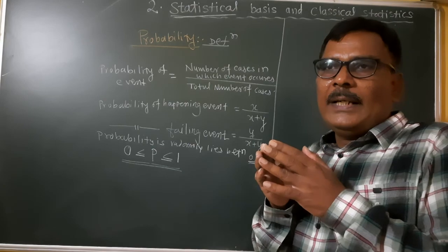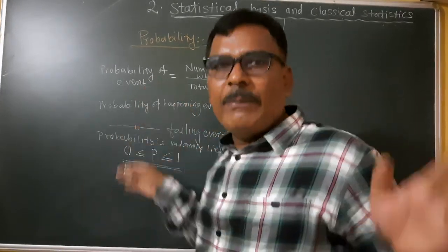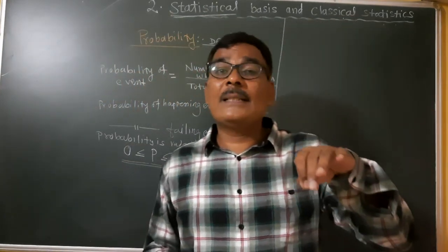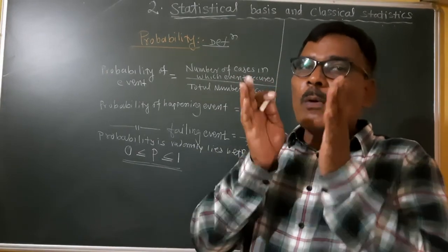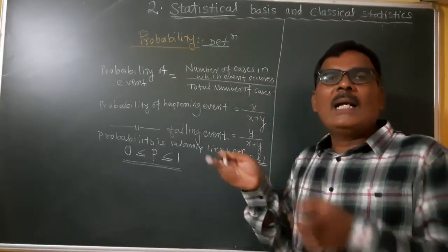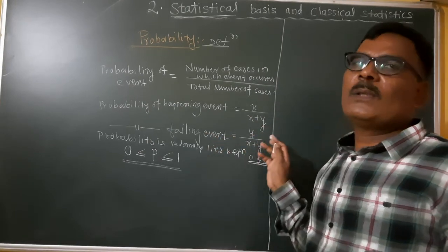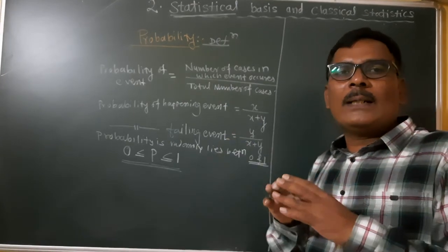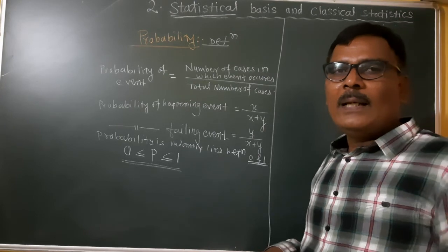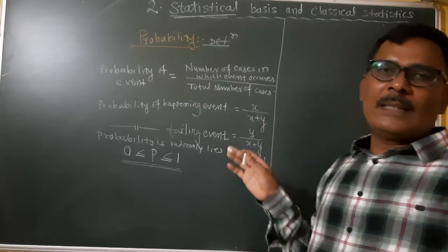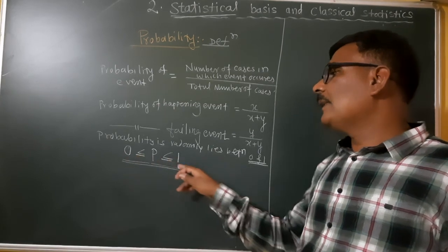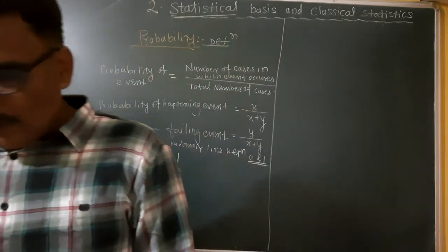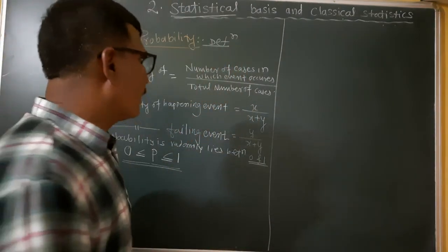When we consider two events — a happening event considered as x and a failing event as y — the probability of the happening event is x upon (x + y) and of the failing event is y upon (x + y). Probability is always between 0 and 1: a sure event has probability 1 and an impossible event has probability 0, so 0 ≤ P ≤ 1.